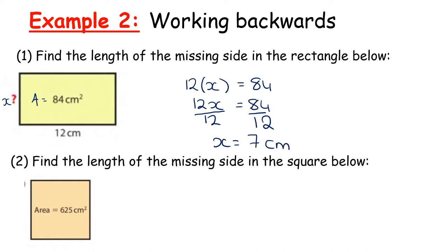You might notice this is simply 84 divided by 12, which is exactly what we did — just laid out algebraically. It's a good idea to get used to using algebra in easier cases so that when harder questions require it, you're more familiar. But going straight to 84 divided by 12 is perfectly fine and gives 7 centimetres.